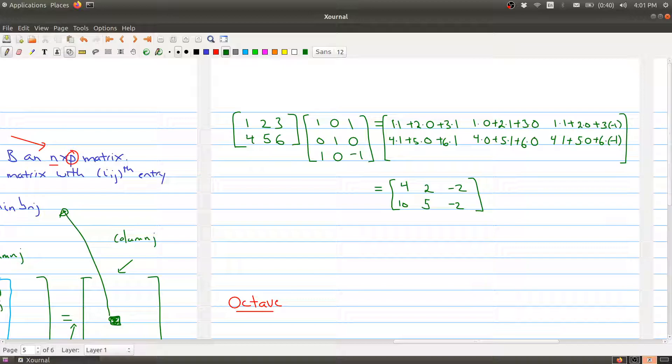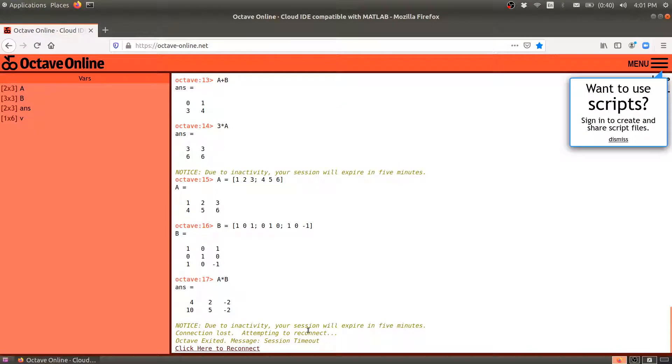Okay. Now this just gives you one example of how to do this. And as you may expect you can do this in Octave. And the command is simply A times B. And just remember in most computer algebra systems multiplication is the star or the asterisk.